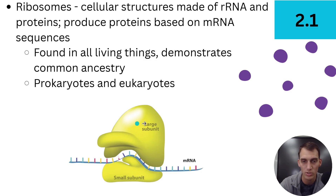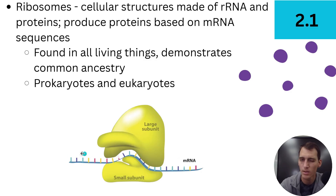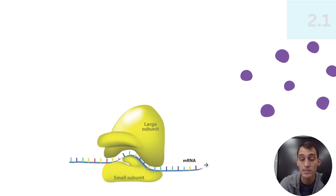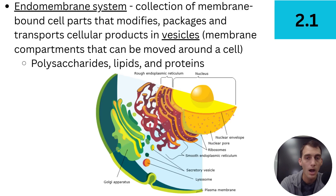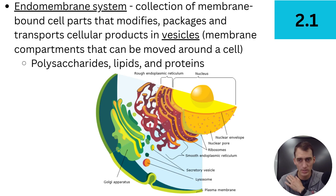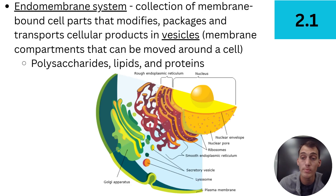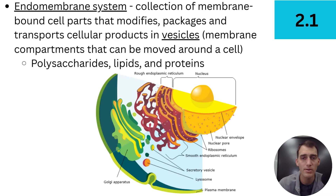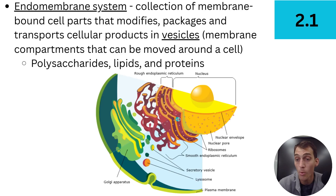Here's a little preview of what translation looks like: mRNA slides through the ribosome, which puts together amino acids in a particular order. Remember, the order of amino acids determines the structure and function of the protein. Now let's get into some of the bigger stuff — structures found in eukaryotes. Eukaryotes have membrane-bound organelles and internal membranes, so we have what's called the endomembrane system. 'Endo' means within, and it is a collection of membrane-bound cell parts that modifies, packages, and transports cellular products in vesicles.